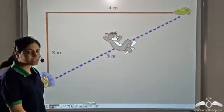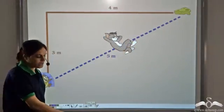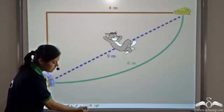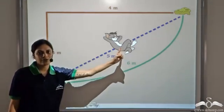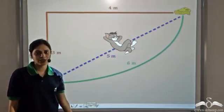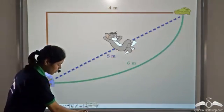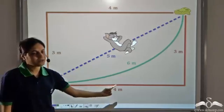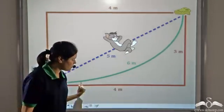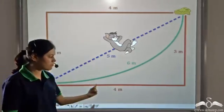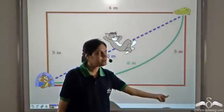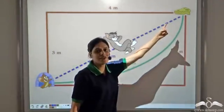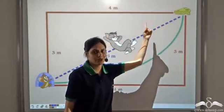Alternatively, he could have taken this path which is six meters long, or this path that is four meters here and then three meters.